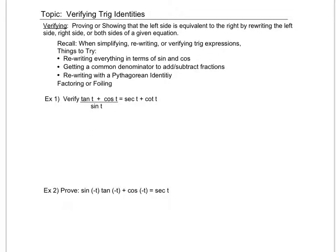Now that we've looked at rewriting different trig expressions, we're going to look at verifying some trig identities. When we verify, all we're doing is proving or showing that the left side and the right side are equivalent by rewriting either one or both sides to match the other side. We're going to use the same things as with rewriting: sines and cosines, common denominators, adding and subtracting fractions, Pythagorean identities, factoring, and foiling.